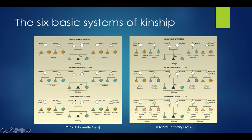The Omaha kinship system is similar in that father's brother is also called father and mother's sister is also called mother, but mother's brother and father's sister have separate terms. Only father's brother's children and mother's sister's children are considered in the sibling set. Mother's brother's children are called mother's brother and mother, and father's sister's children are called nephew and niece.